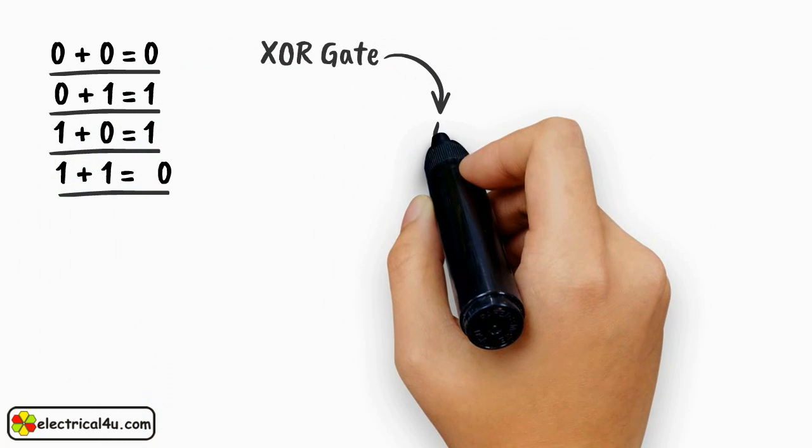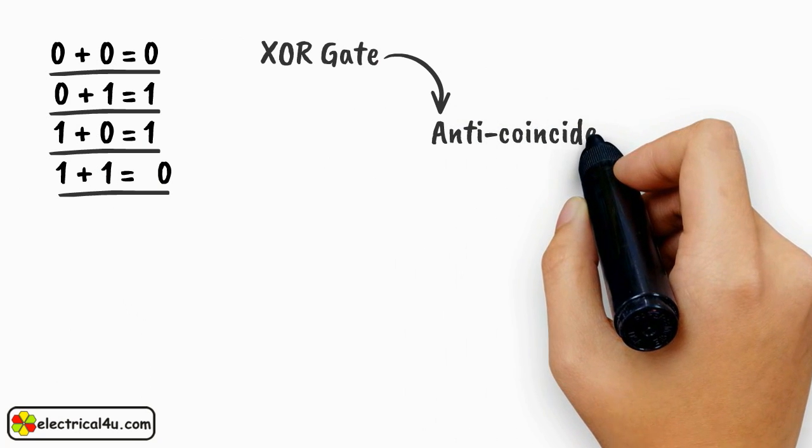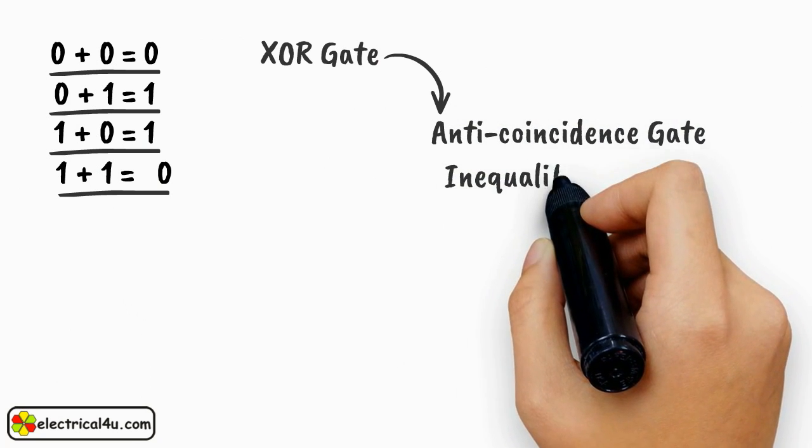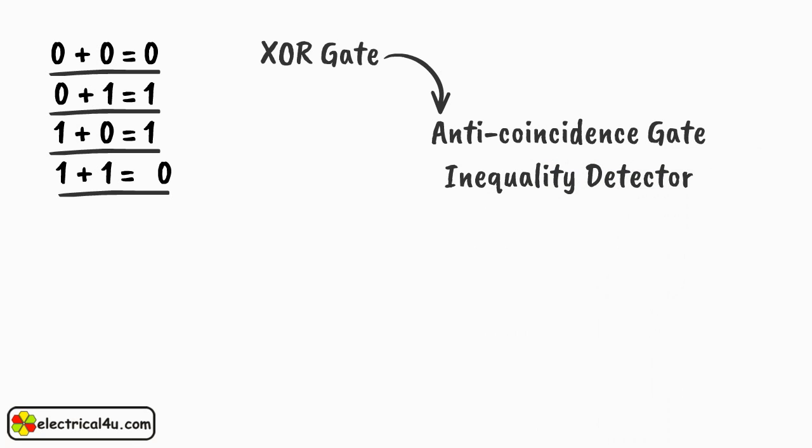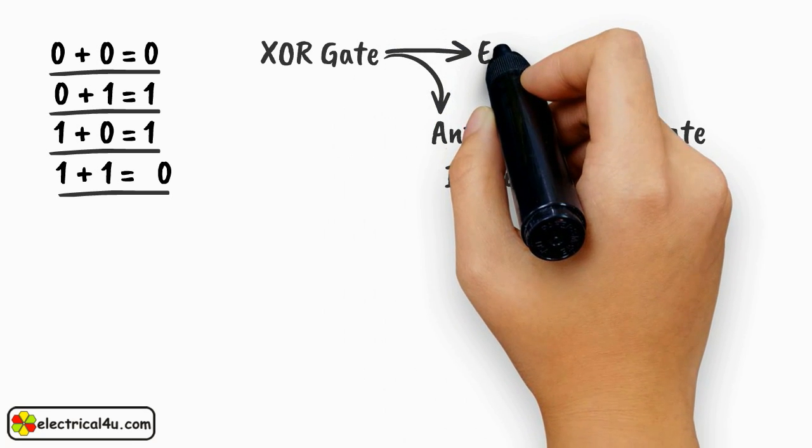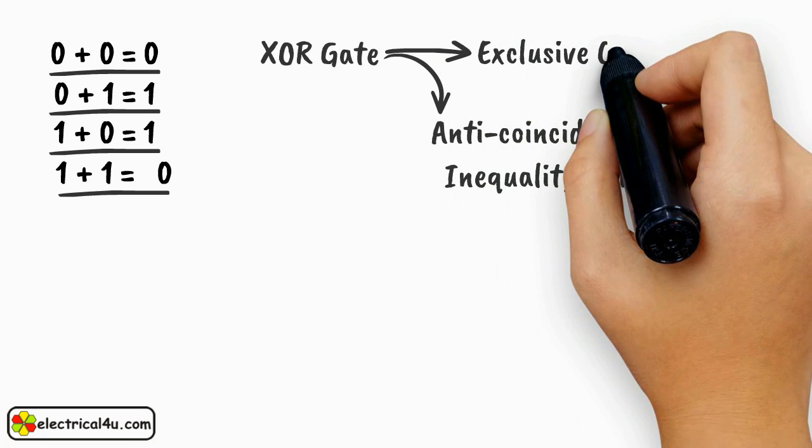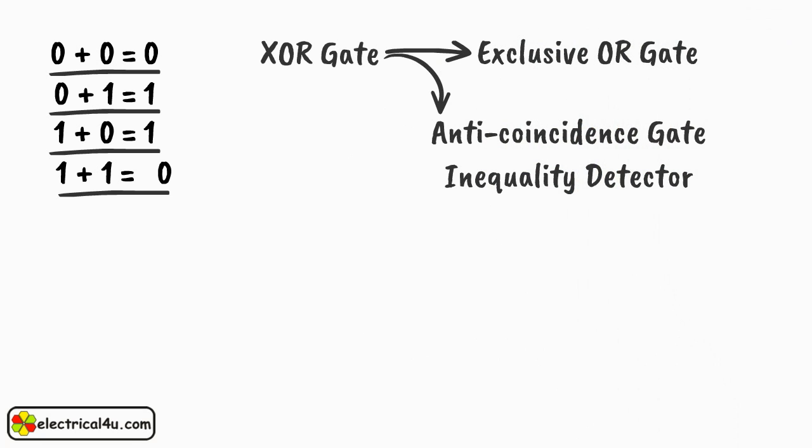This is the reason an XOR gate is also called anti-coincidence gate or inequality detector. This gate is called XOR or exclusive OR gate because its output is only 1 when one of its inputs is exclusively 1.